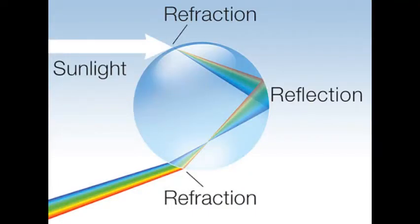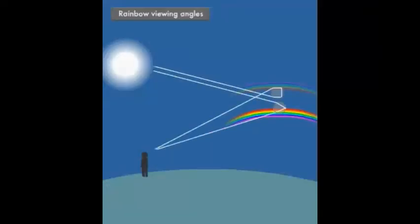Since the droplets are spherical, the rainbow will get a curved shape. This angle is slightly different for different colors of light and will appear split and visible.